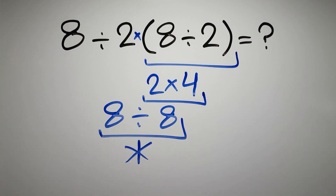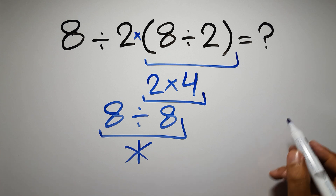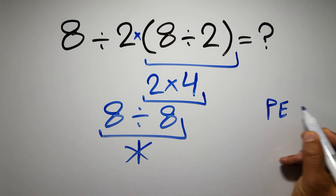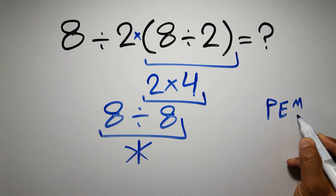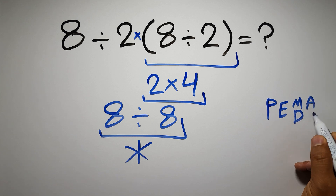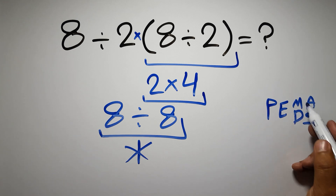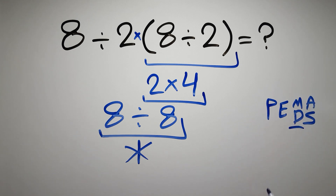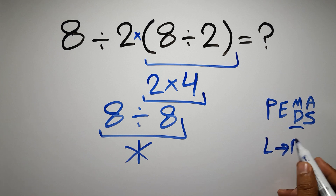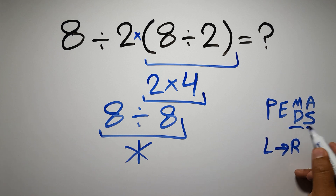According to the order of operations, first we have to do parentheses, then exponents, then multiplication or division, and finally addition or subtraction. Remember that multiplication and division have equal priority, and we have to go from left to right. The same applies to addition and subtraction.